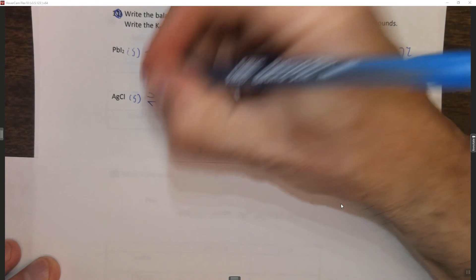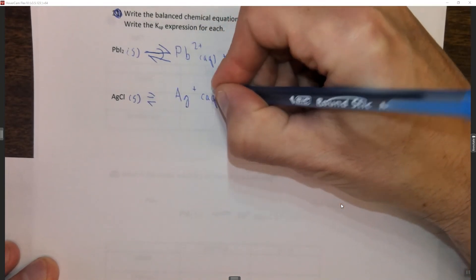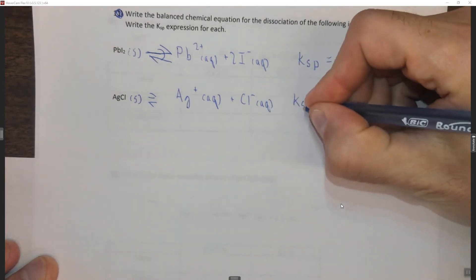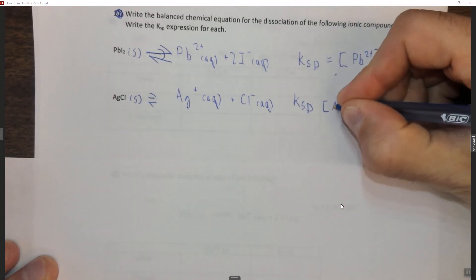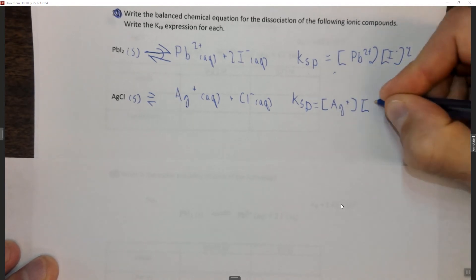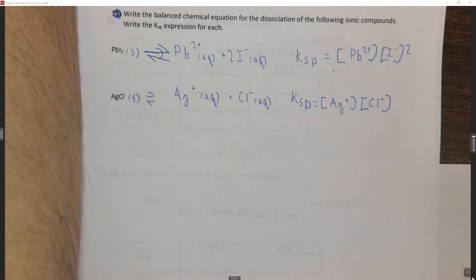We can also do it for AgCl, which is Ag⁺ aqueous plus Cl⁻ aqueous. The Ksp here would be concentration of Ag⁺ times concentration of Cl⁻. So there are our two Ksp expressions, which we'll use in subsequent questions.